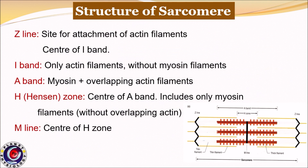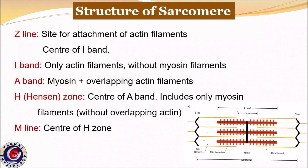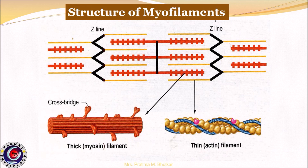Let us revise the components of sarcomere. Z-lines limit the area of the sarcomere; they are the site of attachment for actin filaments and divide the I-band into two halves. The portion of actin without myosin forms the I-band. Myosin filaments with overlapping actin filaments form the A-band. At the center of the A-band is the H-zone, which includes only myosin filaments. The M-line is present in the center of the H-zone. Within the sarcomere, each myosin filament is surrounded by six actin filaments, and each actin is surrounded by three myosin filaments.